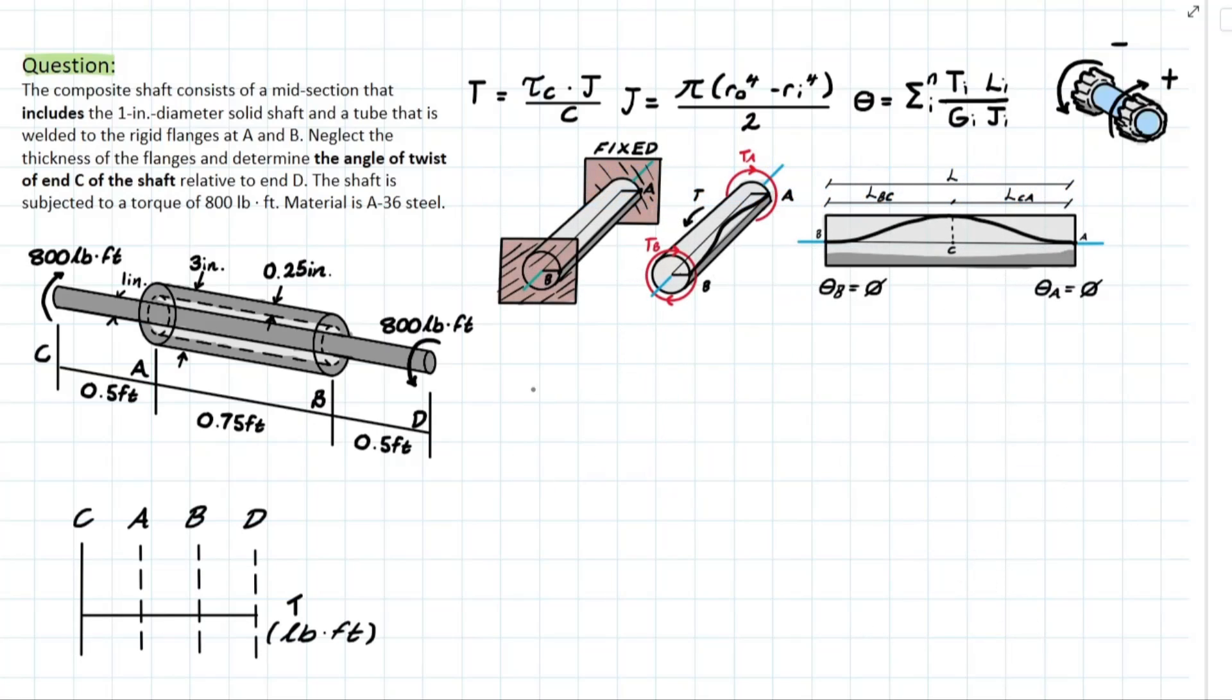All right, so now let's hop into this problem. What it wants us to look at is a composite shaft which consists of a midsection that includes the one inch diameter solid shaft and tube that is welded to rigid flanges at AB. So all that means is that this shaft is running all the way from C to D and this tube is around the shaft at AB welded at points A and point B such that they're acting together.